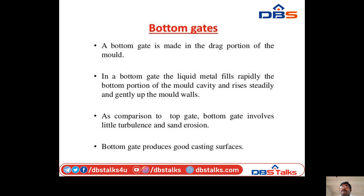Bottom gate: a bottom gate is made in the drag portion of the mold. In a bottom gate, the liquid metal rises rapidly from the bottom portion of the mold cavity and rises steadily and gently up the mold walls. Compared to the top gate, it involves little turbulence and sand erosion. Bottom gate produces good casting surfaces.